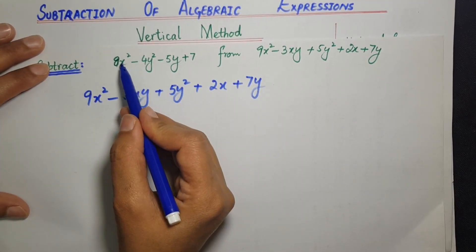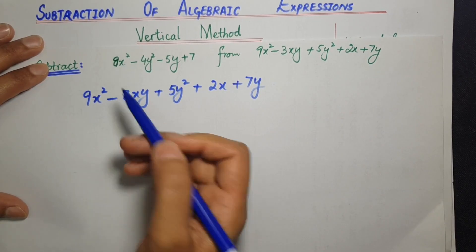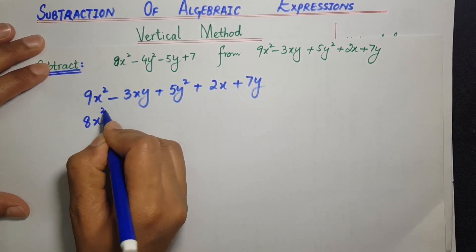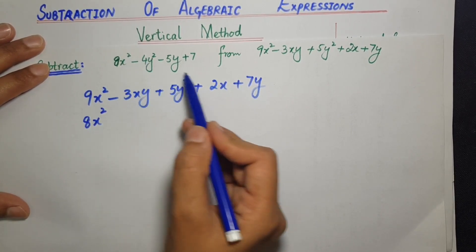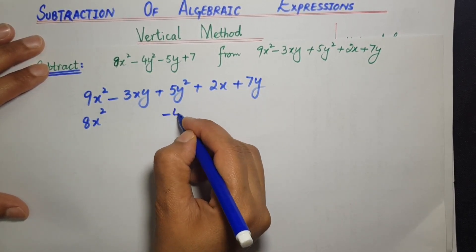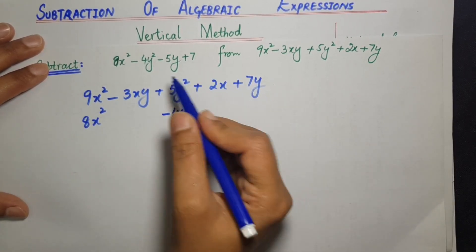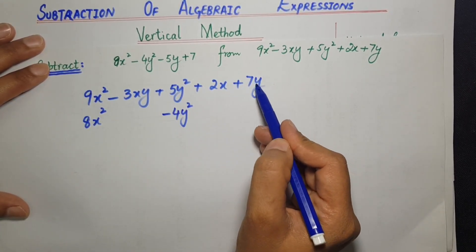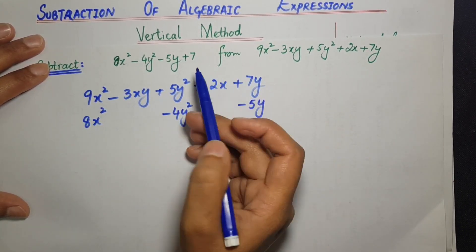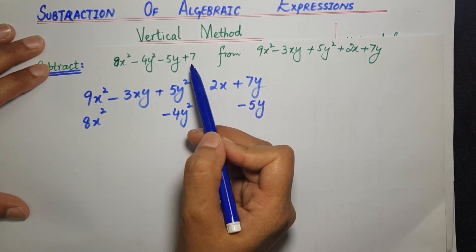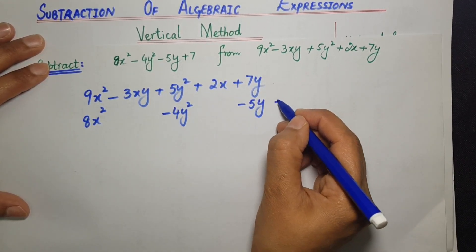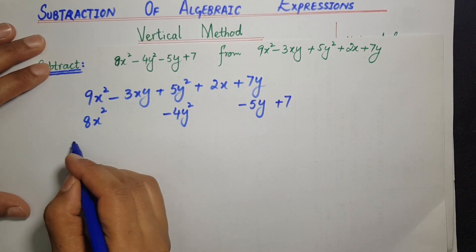next، like terms کو like terms کے نیچے لکھیں گے کیونکہ اس کے بغیر ہم subtract کر ہی نہیں سکتے۔ 4y² کو y² کے نیچے لکھیں گے: minus 4y²۔ next، minus 5y کو y کے نیچے لکھیں گے: minus 5y۔ اور آخری constant number ہے — چونکہ constant number first expression میں نہیں تھا، اس کو باہر لکھ دیں گے۔